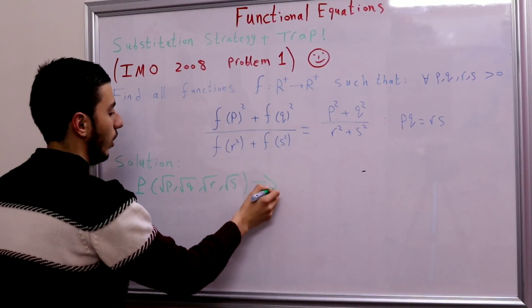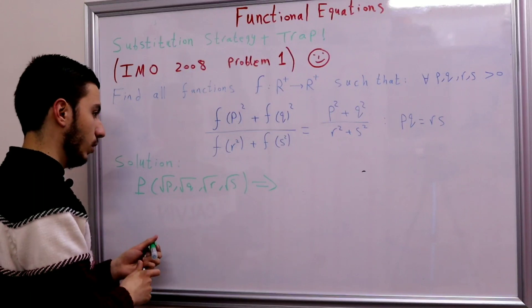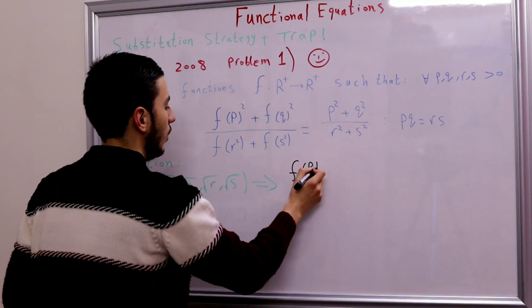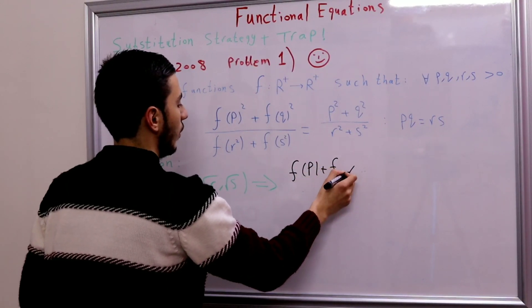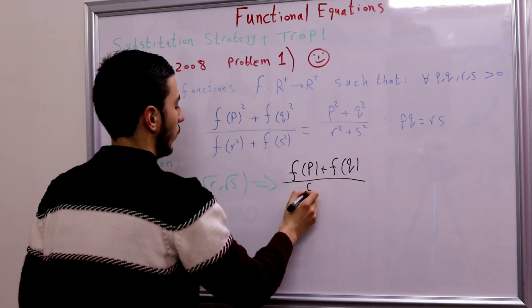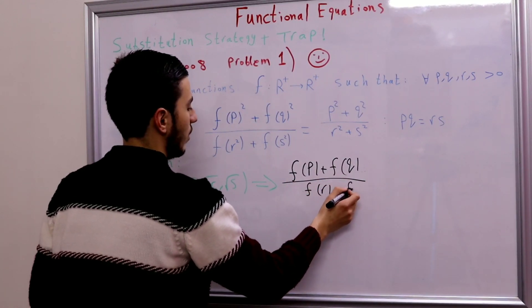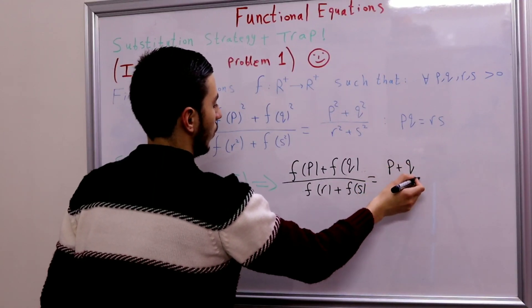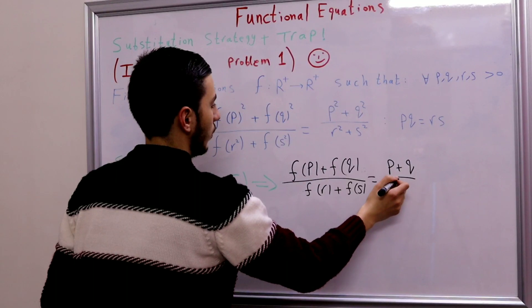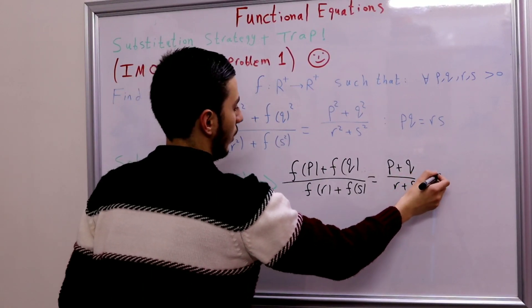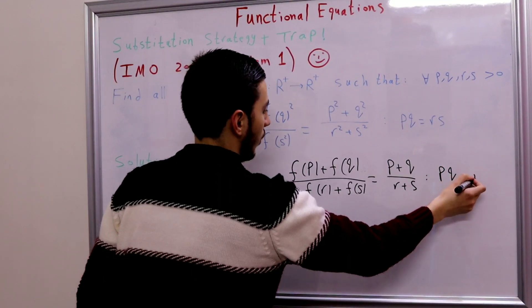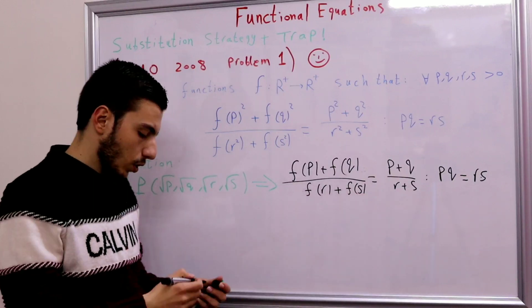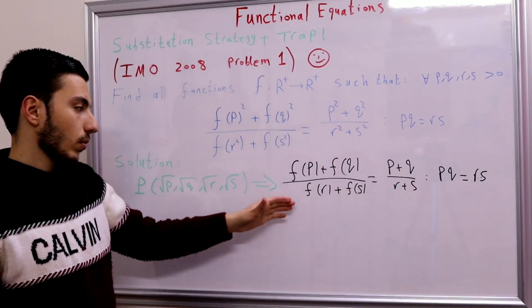By substituting p→√p, q→√q, r→√r, s→√s, we get the simplified equation: (f(p) + f(q)) / (f(r) + f(s)) = (p + q) / (r + s), with the same precondition p·q = r·s.